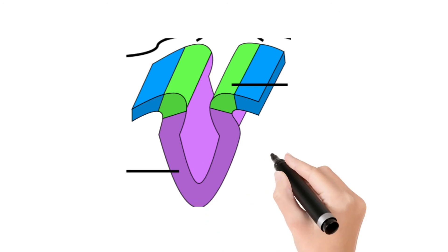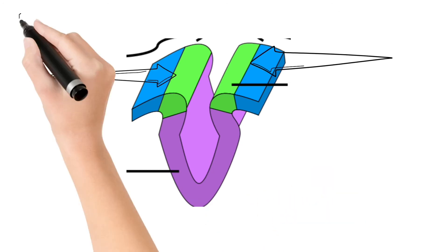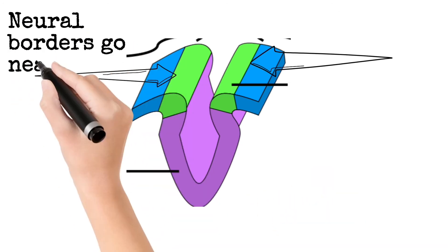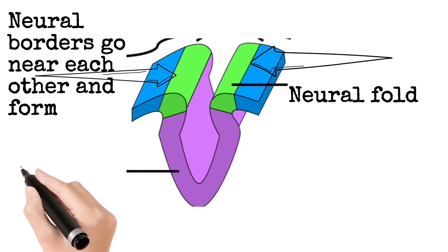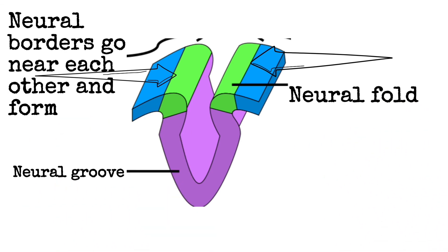If we see diagrammatic, arrows show convergence. Neural plate borders go near each other and form neural fold. And at the lower side formation of neural groove.